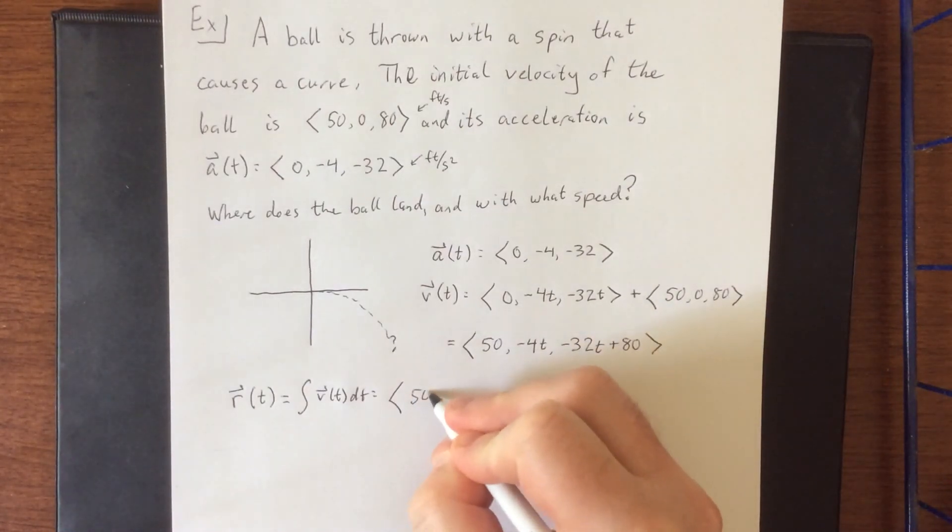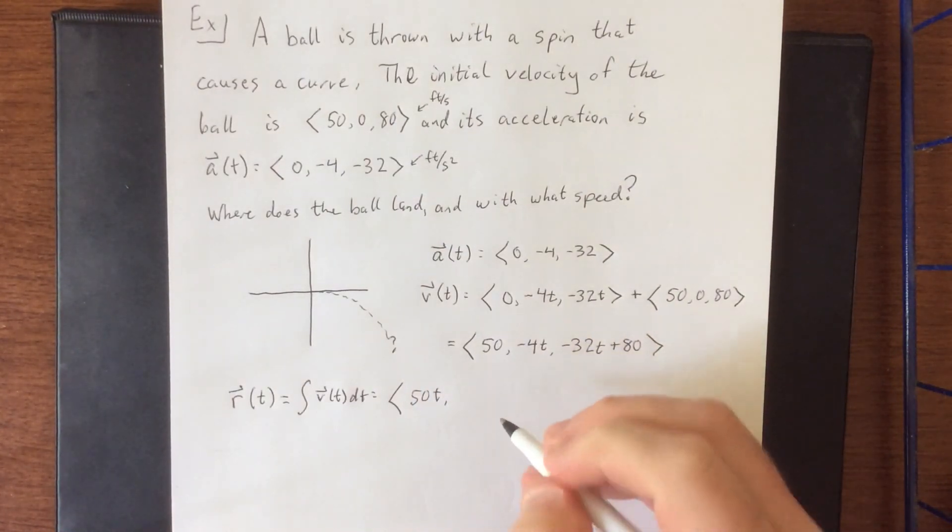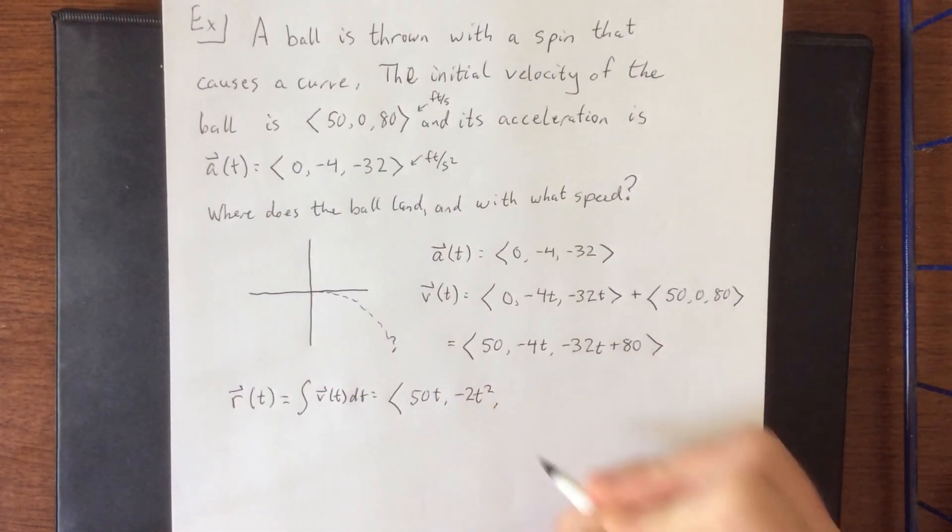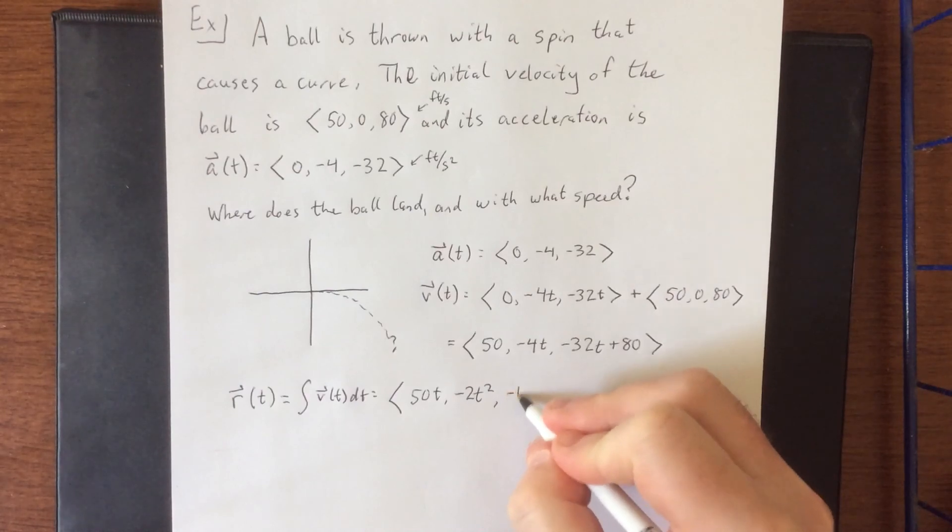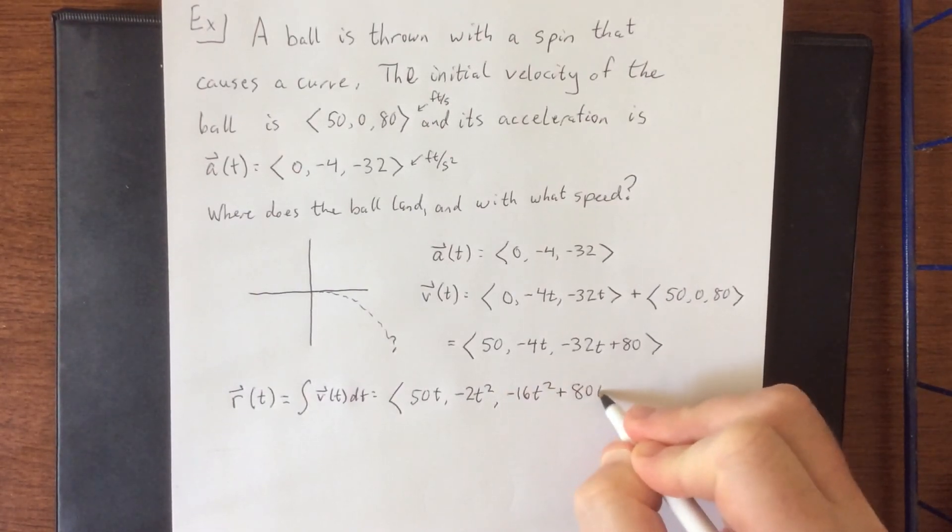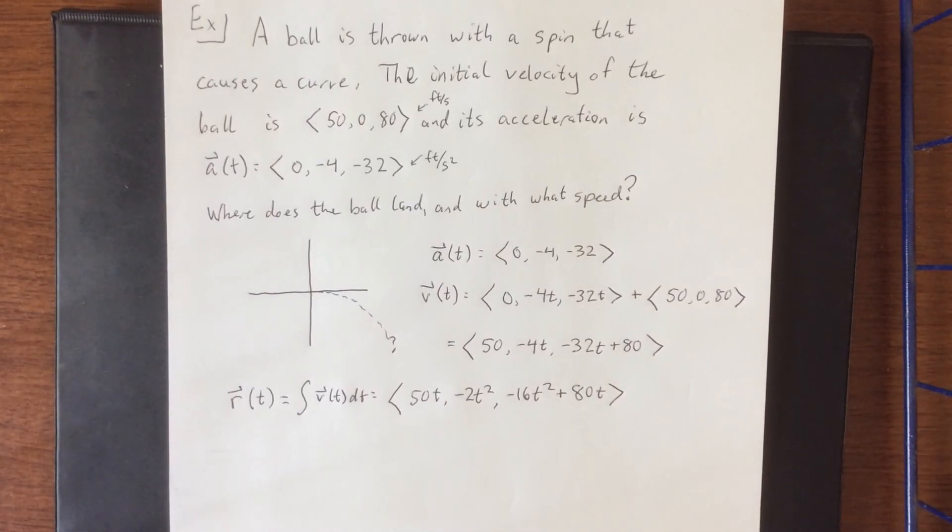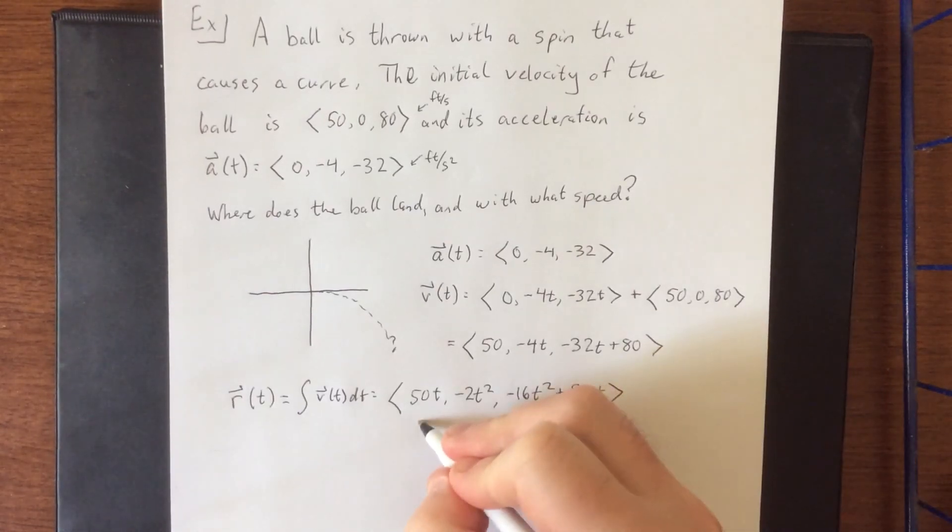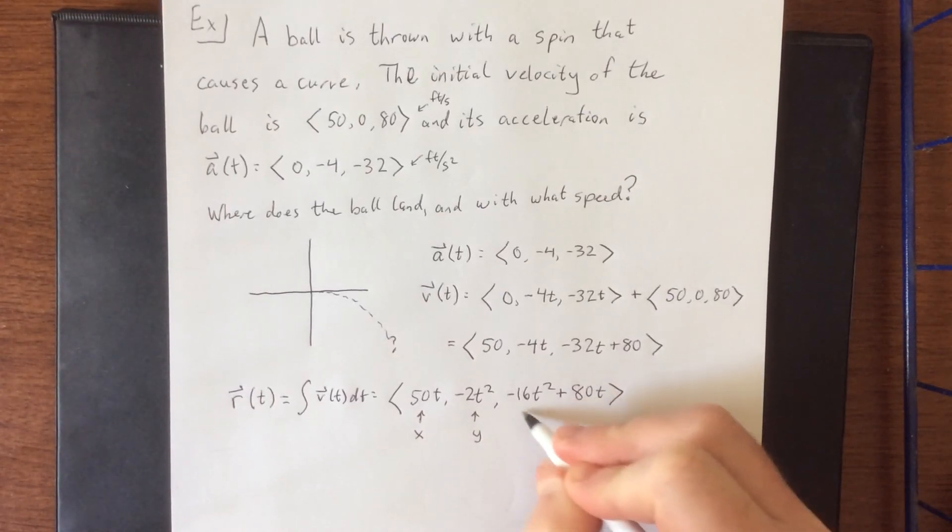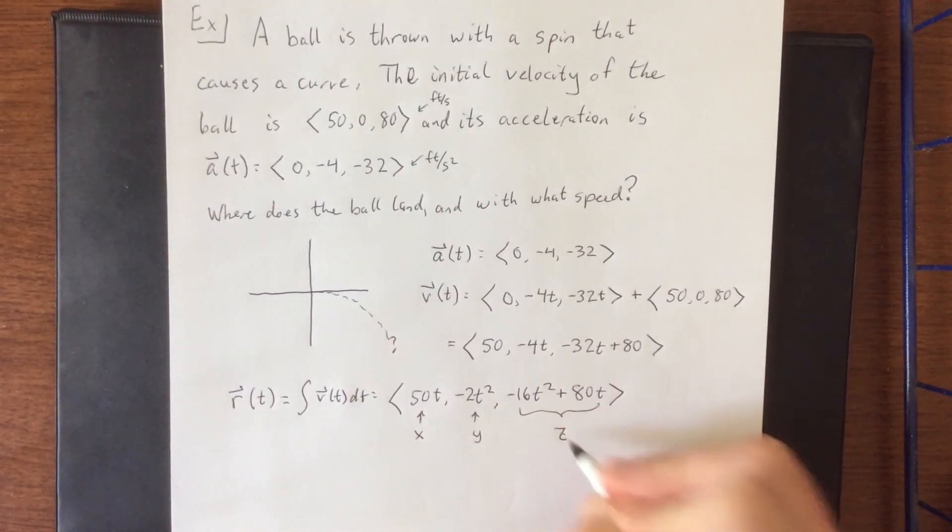So in the x direction, that'll be 50t. In the y direction, that'll be -2t². And in the z direction, -16t² + 80t. Or we could think of this as being parametrically defined where here is your x, here is your y, and this whole thing is your z.